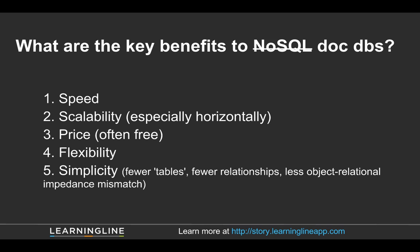They are very good at horizontally scaling out because of some of the things that they give up, and that's part of the speed story. They're often open source, which makes them free, so the price is definitely cheaper than, say, SQL Server or Oracle. And there's a lot of flexibility with the flexible schemas that they have. But there's another benefit that often gets overlooked, and that's actually simplicity — the simplicity that a document database brings to your application.